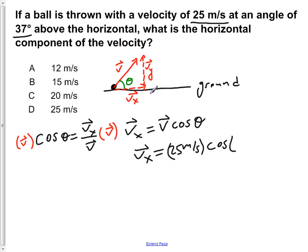Which is shown right there, and I'll plug that in there. Now the cos of 37 degrees is roughly equal to 0.8, so vx is equal to 25 meters per second times 0.8, that is approximately equal to 20 meters per second.